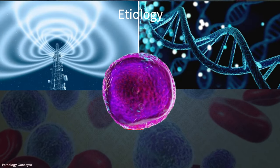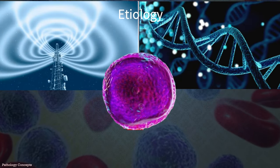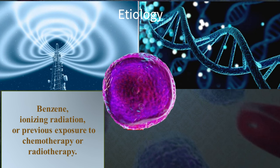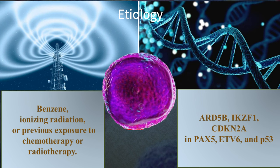The etiology of ALL is unknown. Some environmental and genetic factors may be responsible. Environmental factors include exposure to benzene, ionizing radiation, or previous exposure to chemotherapy or radiotherapy. Genomic studies have noted that somatic polymorphic variants of ARD5B, IKZF1, and CDKN2A are associated with increased risk of ALL. Other rare germline mutations in PAX5, ETV6, and particularly P53 can also strongly predispose to the development of leukemia.